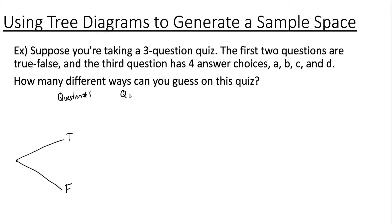Now when we get to question two there are two choices we can make again. We can either guess true or false. When we get to question three things change a little bit because now there are four different choices we can make: A, B, C, or D.